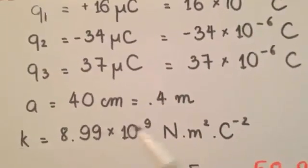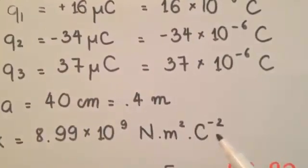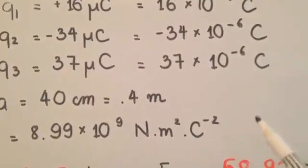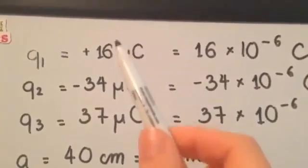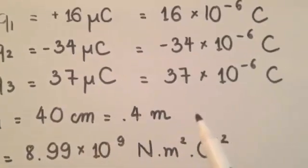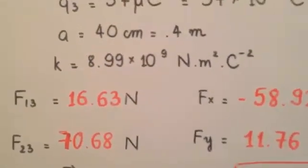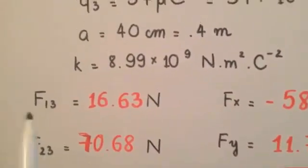Remember, the unit of K is Newton meter squared coulomb to the power of minus 2. You need to convert the unit from microcoulomb to coulomb and from centimeter to meter. After that, we plug in all numbers into the formulas.